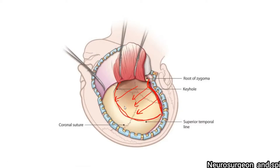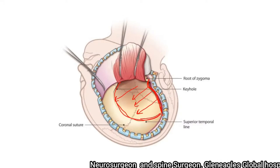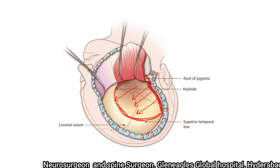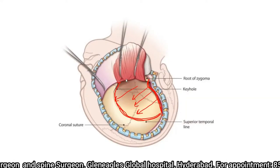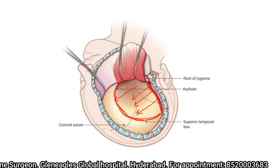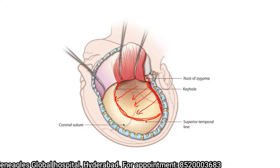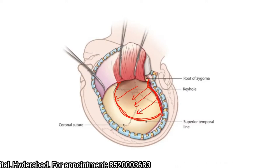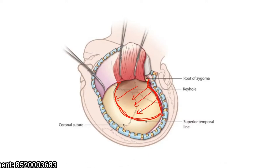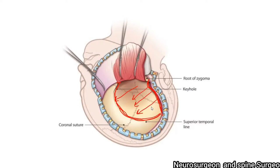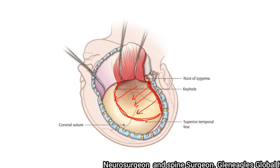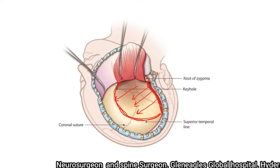When you come to the attachment of the temporalis muscle, you can use the same periosteal elevator to detach it. You can leave a small cuff of the muscle attached along the line, which will help at a later stage to suture the muscle back. However, because this is a decompressive craniectomy and you are not planning to replace the bone flap, this precaution is not required. The temporalis muscle is then reflected backward.